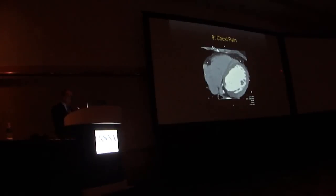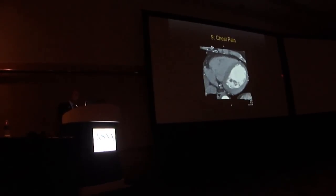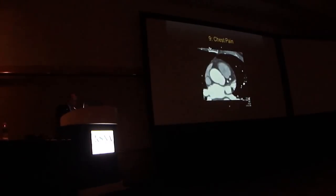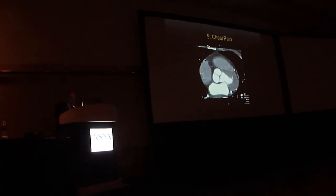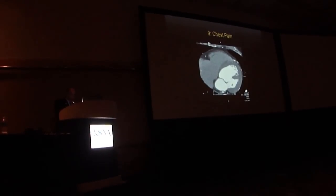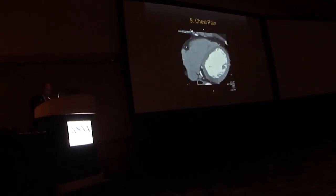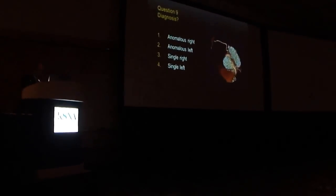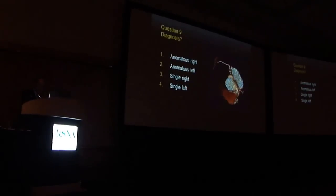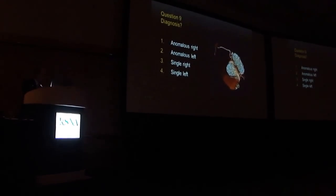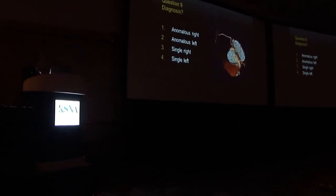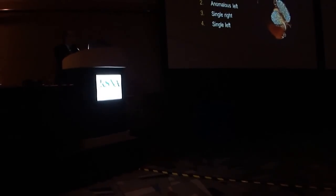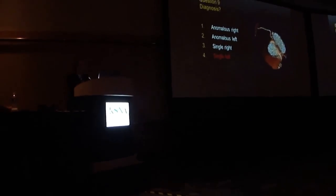Next patient with chest pain — axial CT with contrast was performed. Differential considerations were anomalous right, anomalous left, single right, or single left coronary artery. The majority were right — 44 out of the total.